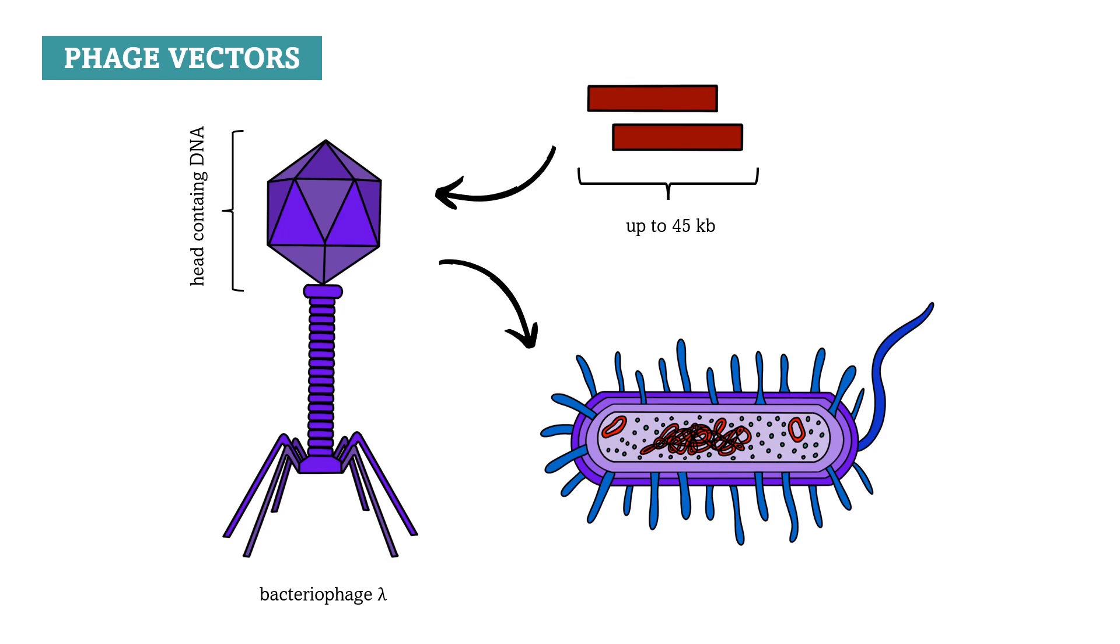As you can imagine, there are also cloning vectors that can be introduced into eukaryotic cells. For example, a yeast artificial chromosome, a DNA molecule with a yeast origin of replication, a pair of telomeres and a centromere can carry very long DNA fragments and it behaves in the same way as yeast chromosomes.